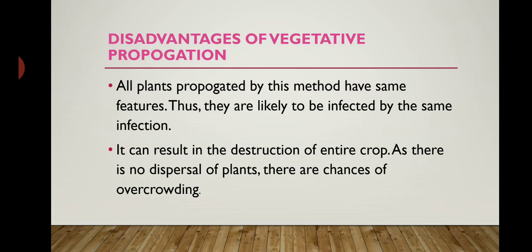Second disadvantage: it can result in the destruction of the entire crop. As there is no dispersal of plants, there are chances of overcrowding. The entire crop can be destroyed because the new plants will grow very near to each other, and because they grow very fast, you cannot stop it. This overcrowding can result in the destruction of the entire crop produced by this method. These are the two disadvantages of vegetative propagation.